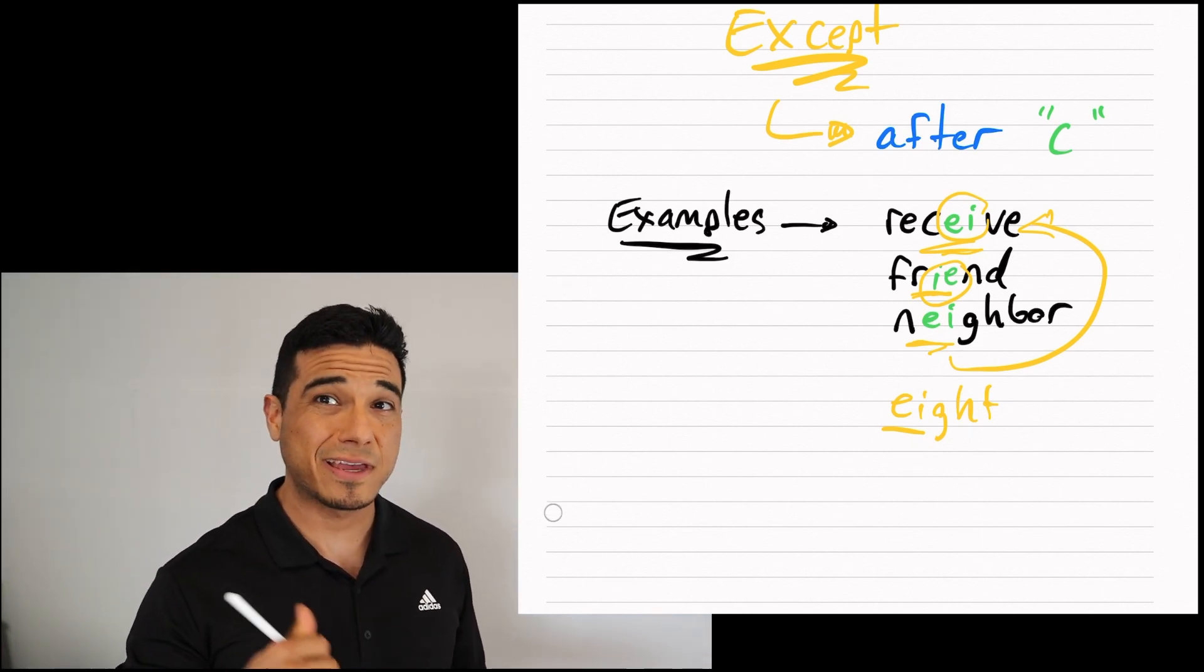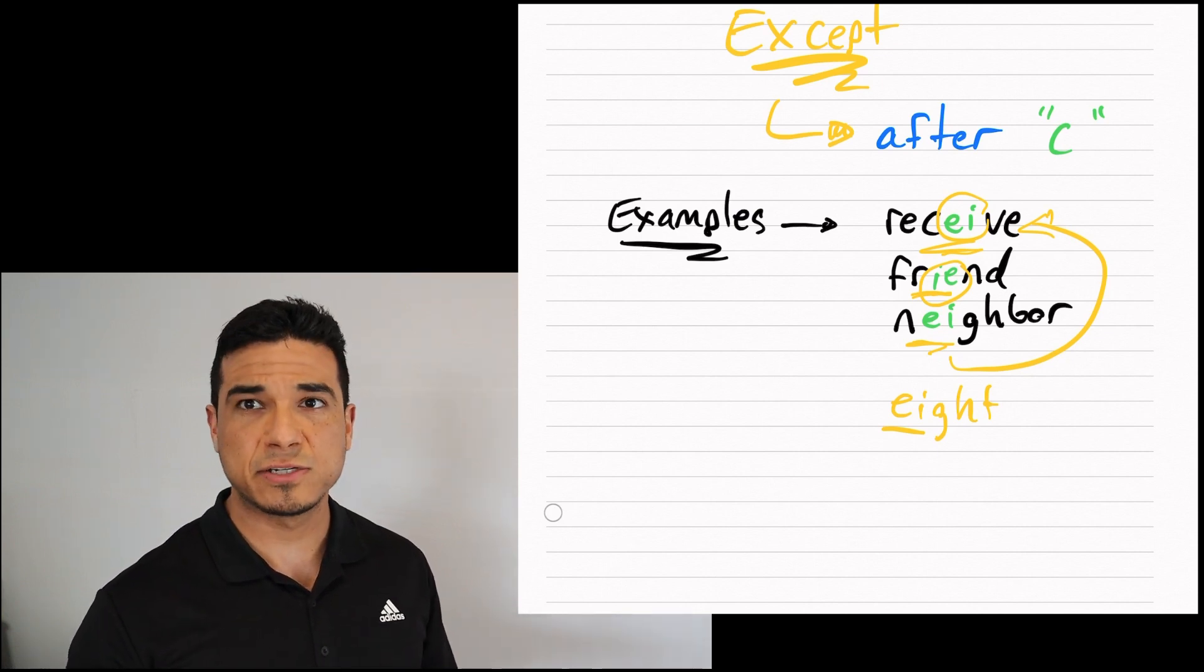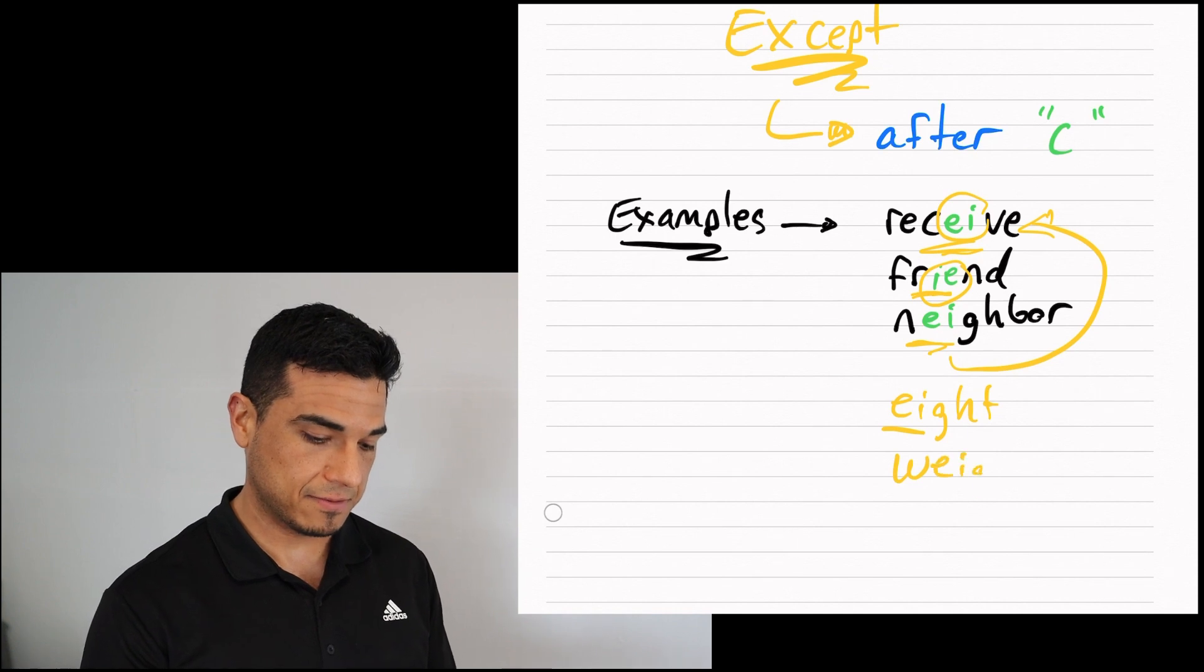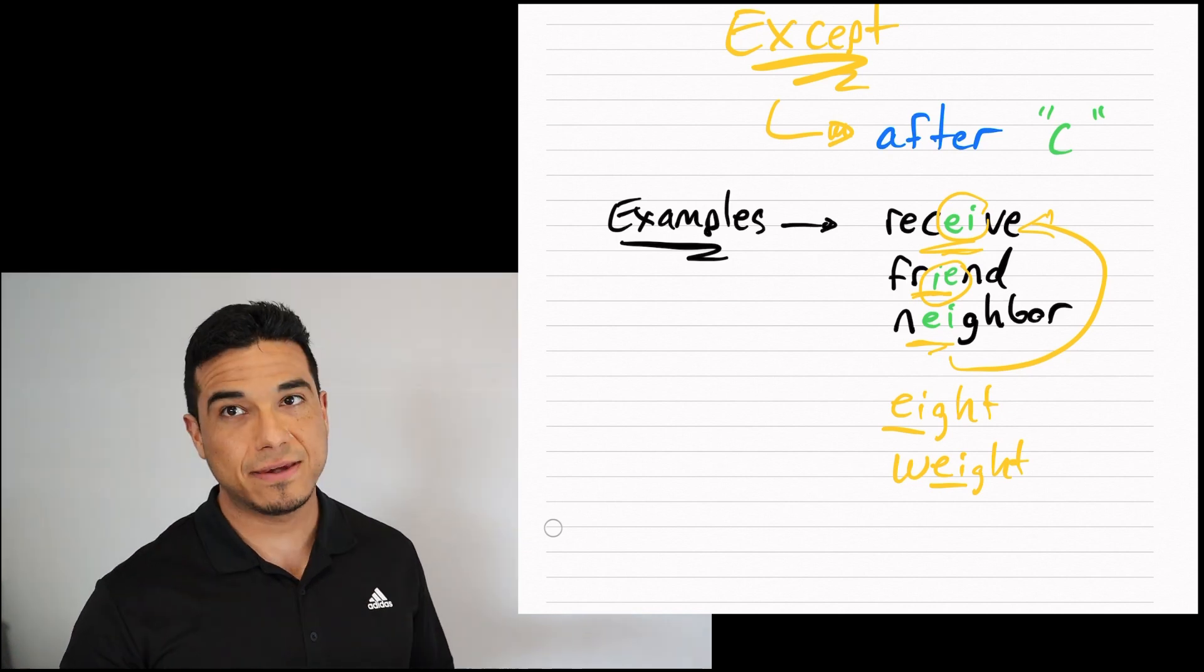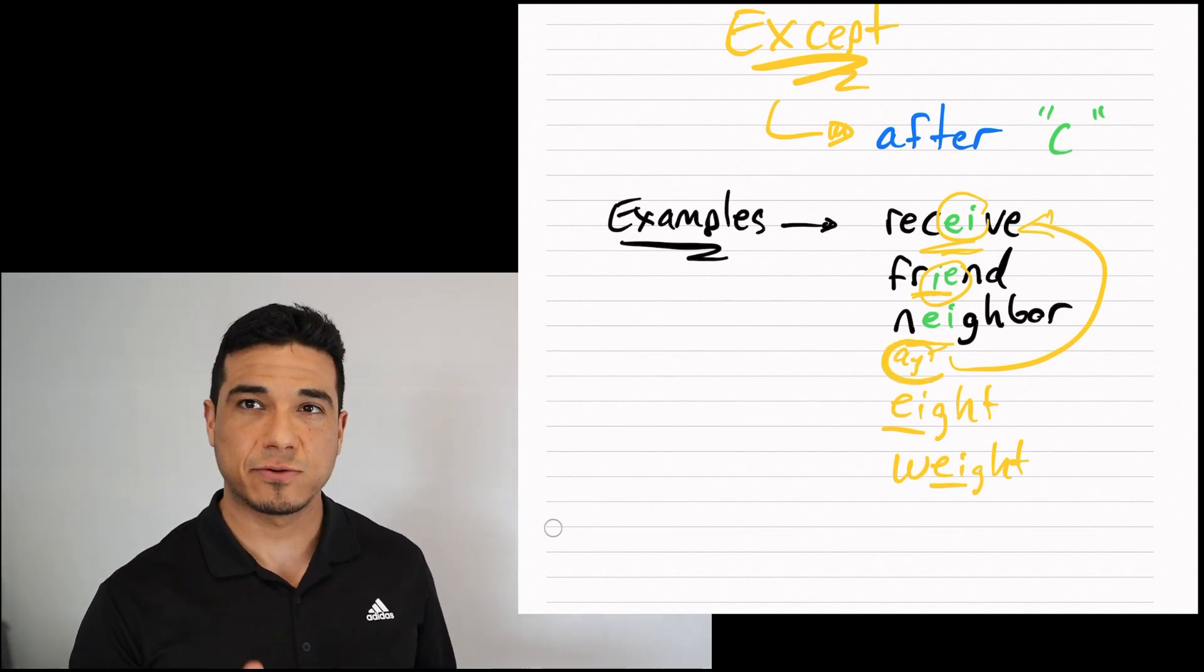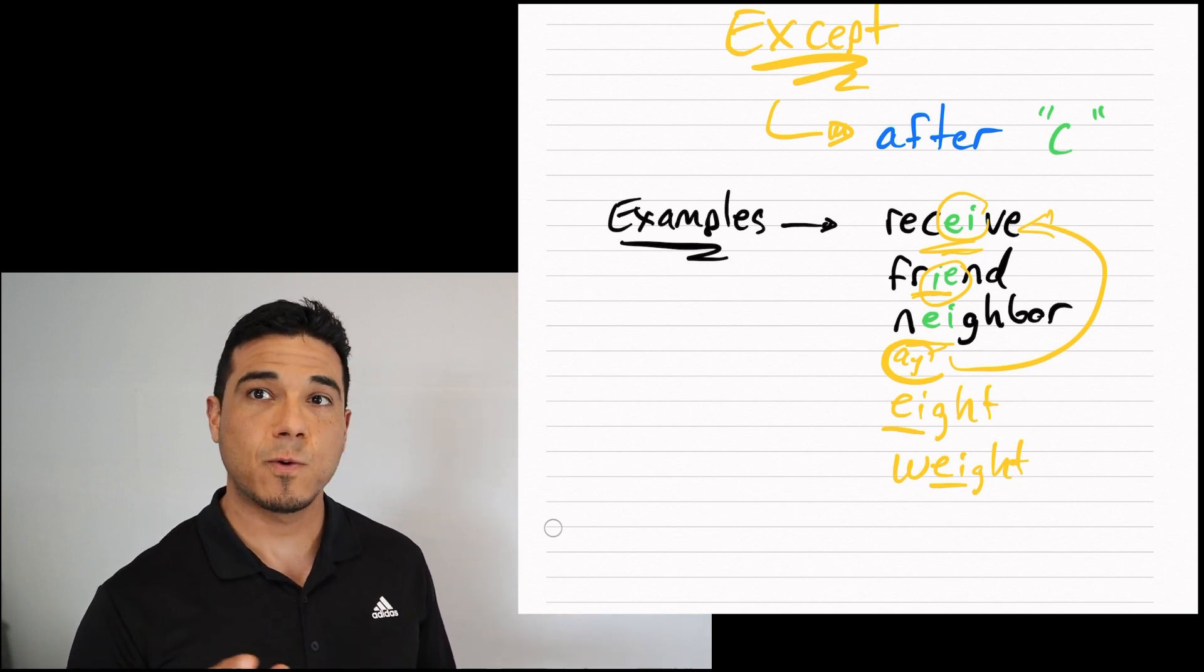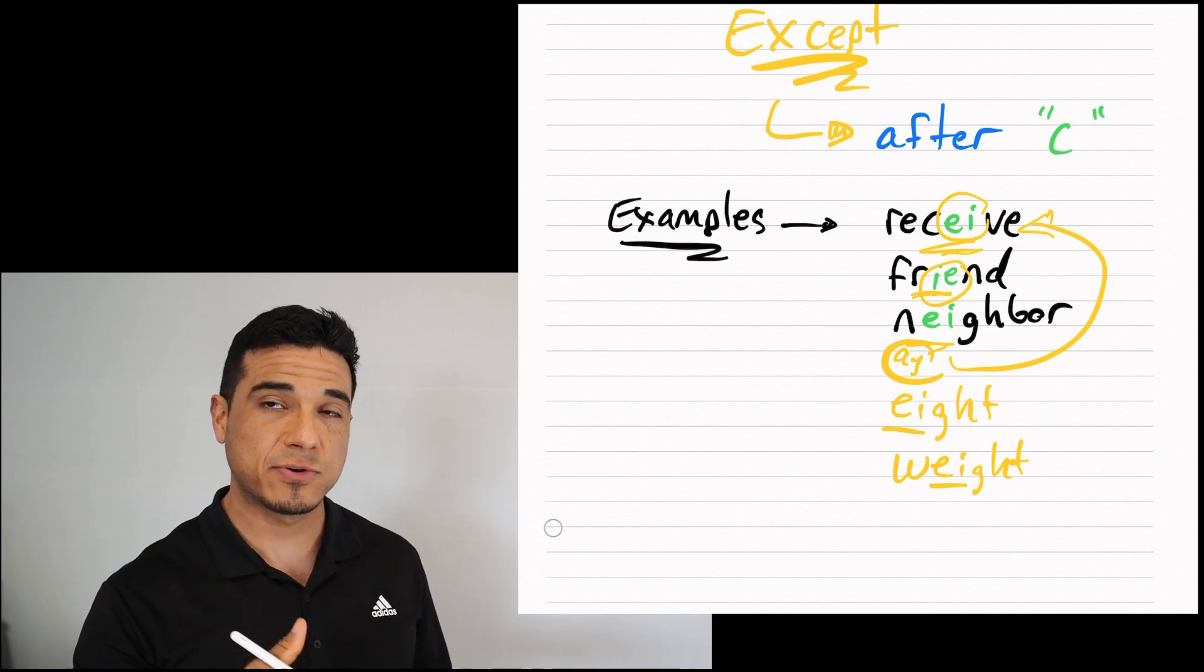Here it's not I before E, it's EI to make eight. Another instance where we're looking for that A sound created by the E and I would be when you're measuring someone's weight. So we have EI, despite the fact that there is no C present. In neighbor, same issue, you have that AY sound that's being generated by the EI. So neighbor, eight, weight. This new sound is really what you're looking to reproduce in these words.